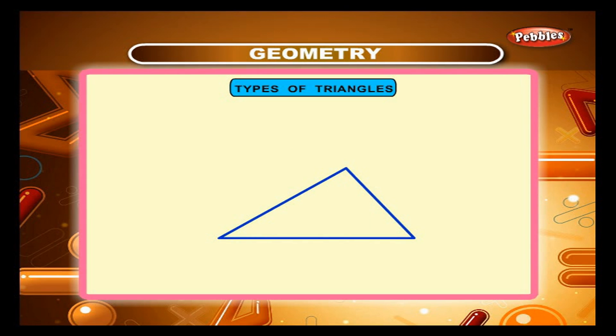A triangle having all sides of different lengths is a scalene triangle. This is a scalene triangle. Measure the sides and verify yourself.